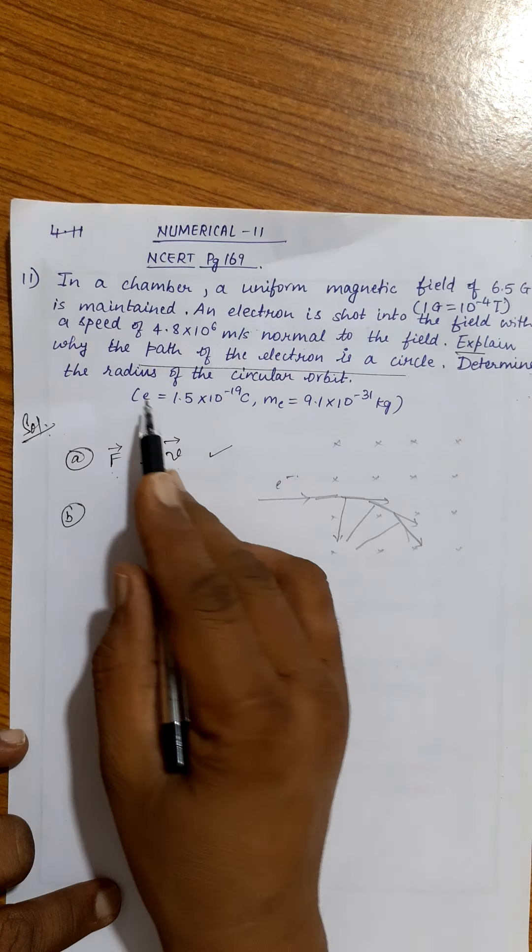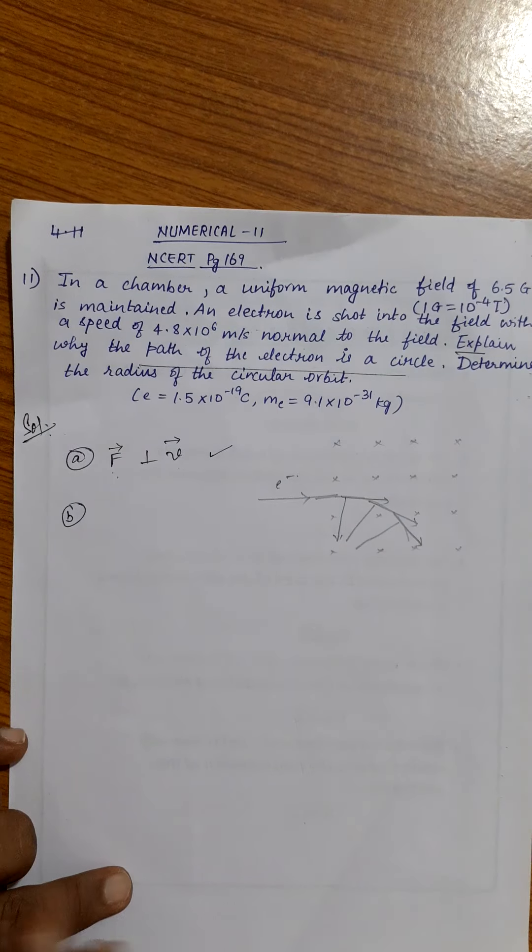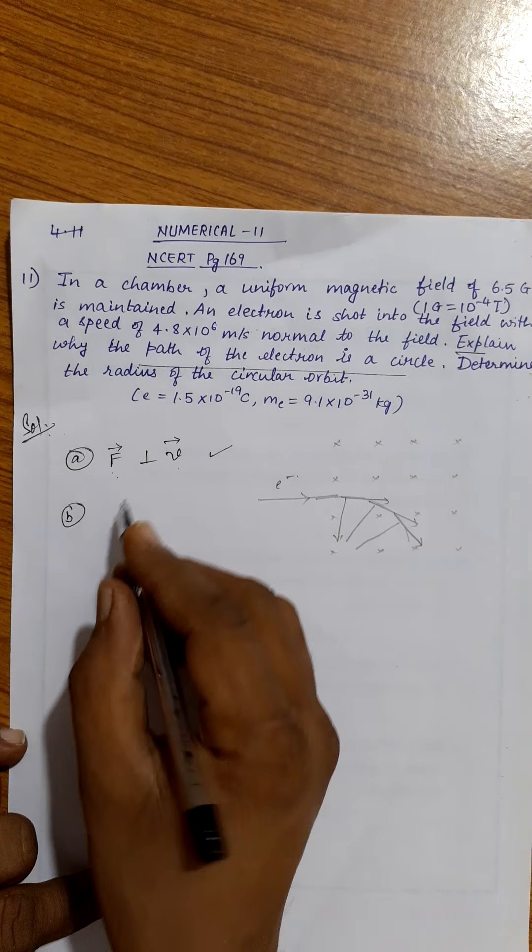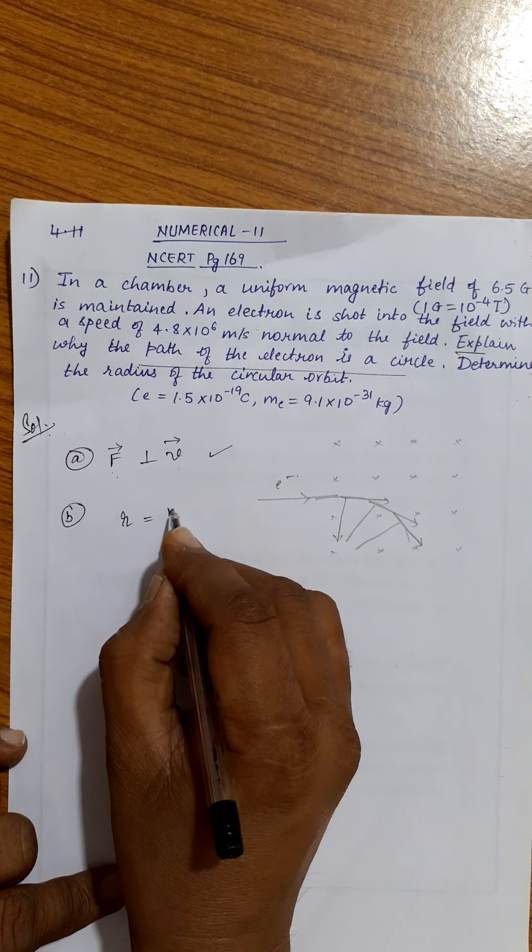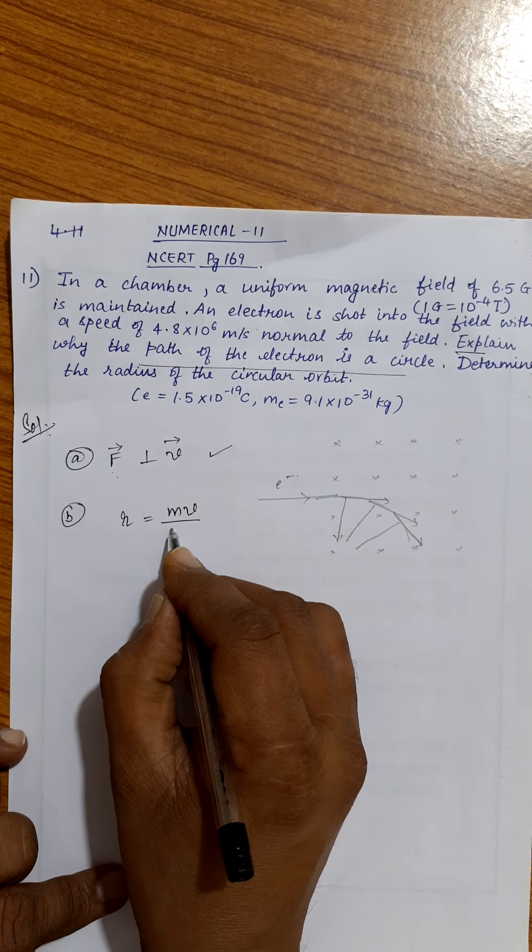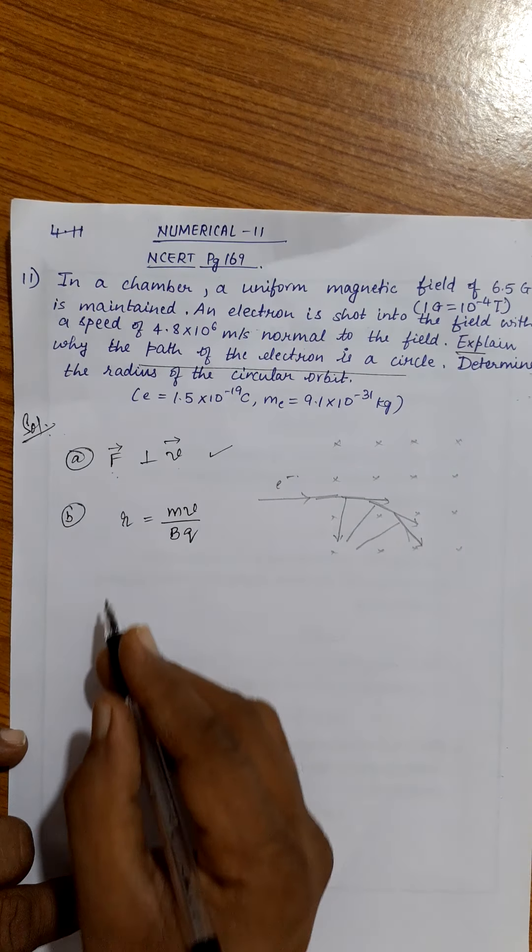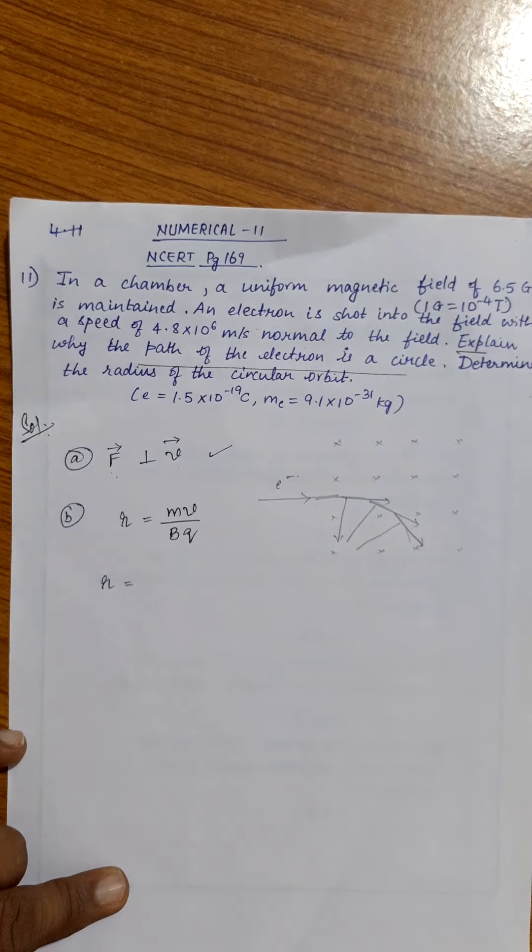Number two, determine the radius of circular orbit. If you remember, the radius of the circular orbit, the formula is mv by bq. Refer previous videos. Radius, mass.